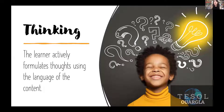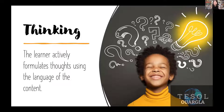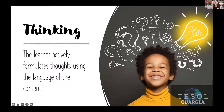Then we have thinking, which means I am able to think using the content literacy. I can think using all those vocabularies and structures. I can interact, generate thoughts, which lead to all the other literacies. I can think and write, think and speak, think and listen, and think and read. Those are the five literacies you want to hit when doing content-based learning.